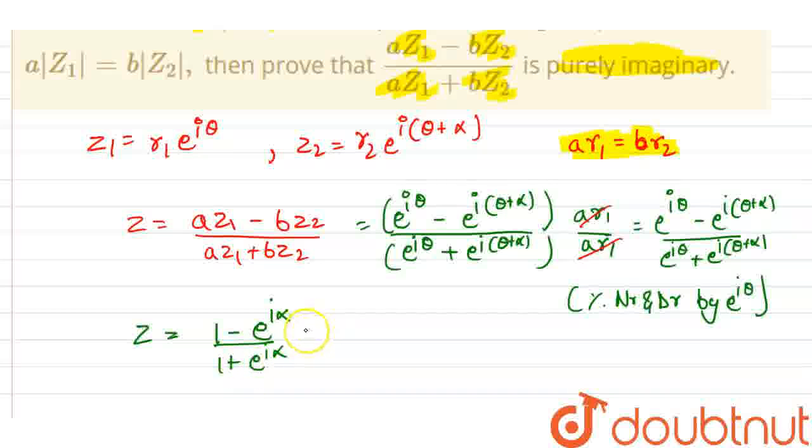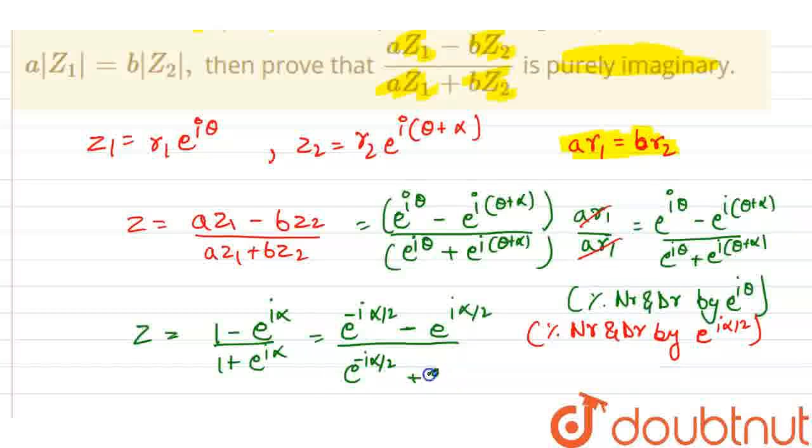So now we have to again divide numerator and denominator by e to the power i alpha theta by 2. So now, in this condition, z is equal to e to the power minus iota alpha by 2 minus e to the power iota alpha by 2. Half got cancelled and half remained. So it is minus, divided by similarly e to the power minus iota alpha by 2 plus e to the power iota alpha by 2.